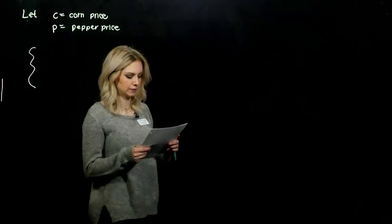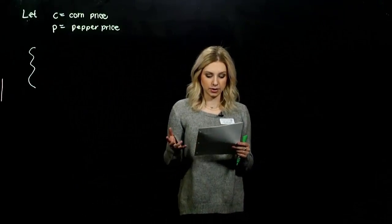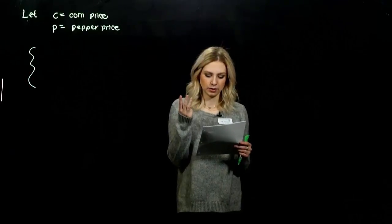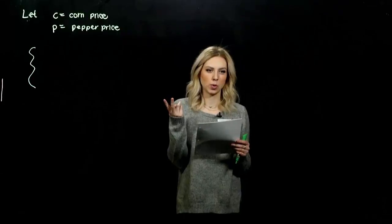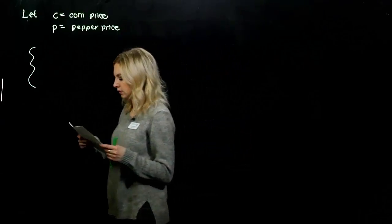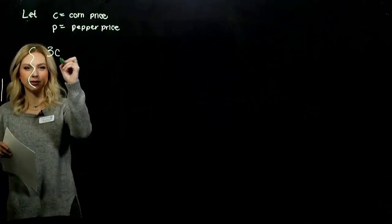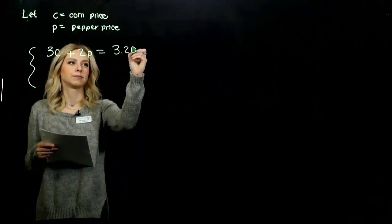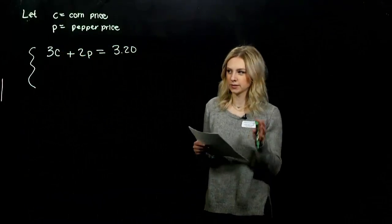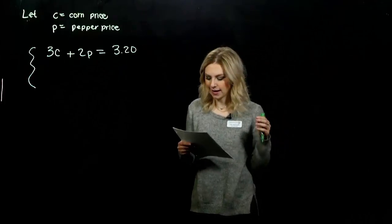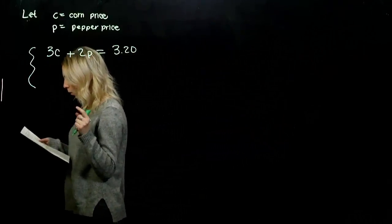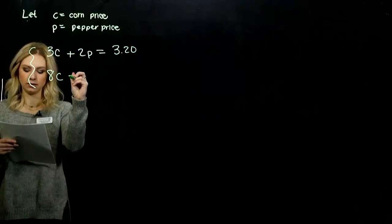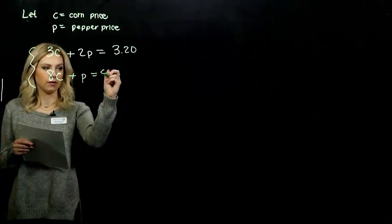So what system are we working with? How can we build two equations? That second line gives us good information. Shelby bought three ears of corn and two sweet peppers for $3.20. So 3C + 2P = 3.20. That's the total price for Shelby's. And Donna bought eight ears of corn and one sweet pepper for $4.85. So 8C + P = 4.85.